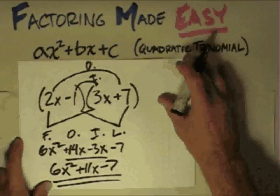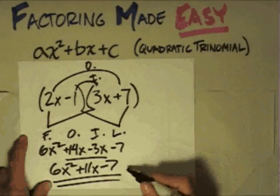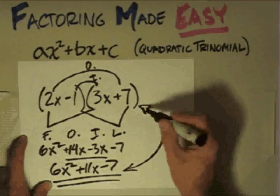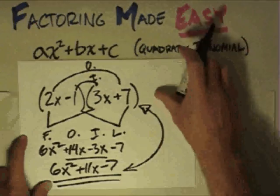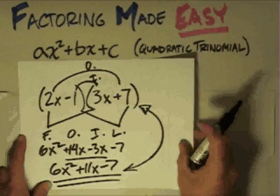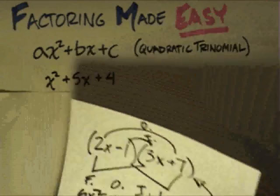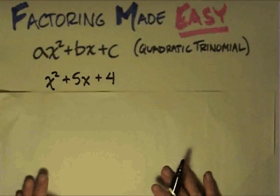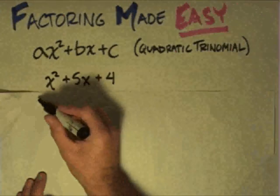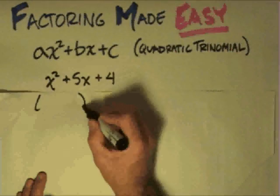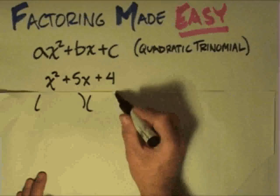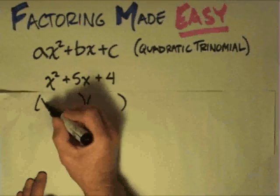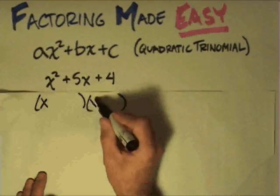Now what I'm doing with factoring is the reverse process. I'm given this and I'm asking: can I break it back down into what it was before it was foiled? There's only one unique solution — you never get more than one answer. If we have something like x squared plus 5x plus 4, we can just write our two parentheses and say: the only way to get x squared is with x and x.